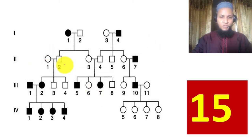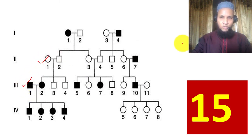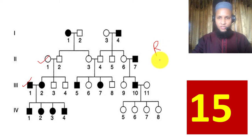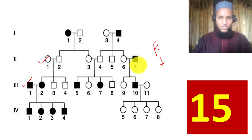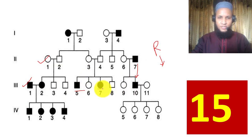Example 15: There is skipping of generation, so it is recessive. Is there male-to-male transmission? Yes. Both males and females are affected, and there is male-to-male transmission. Therefore this is autosomal recessive.